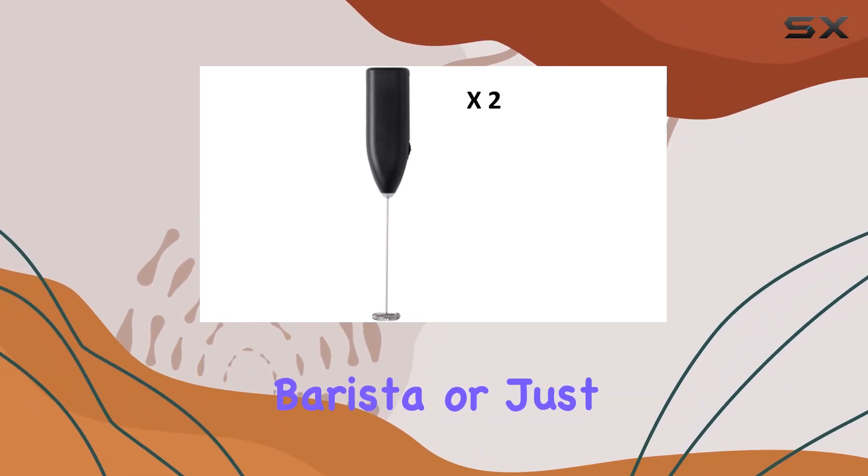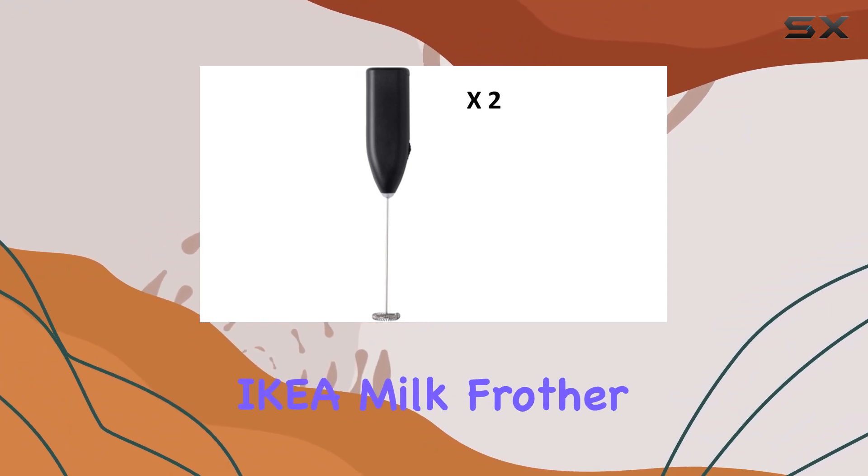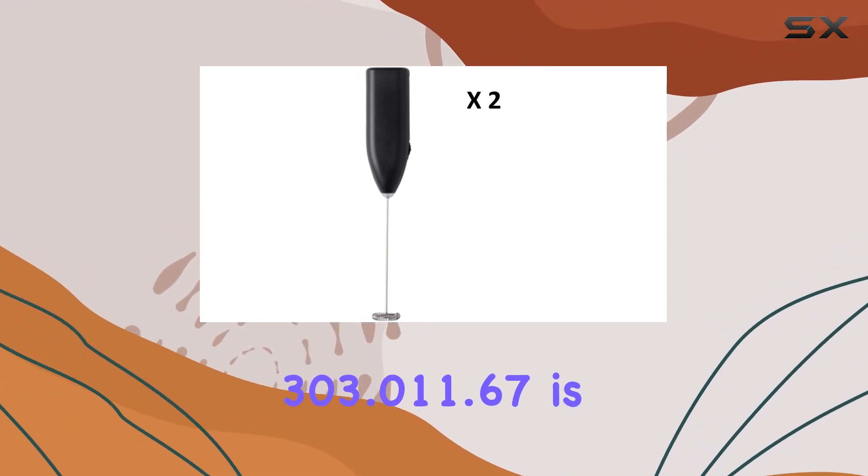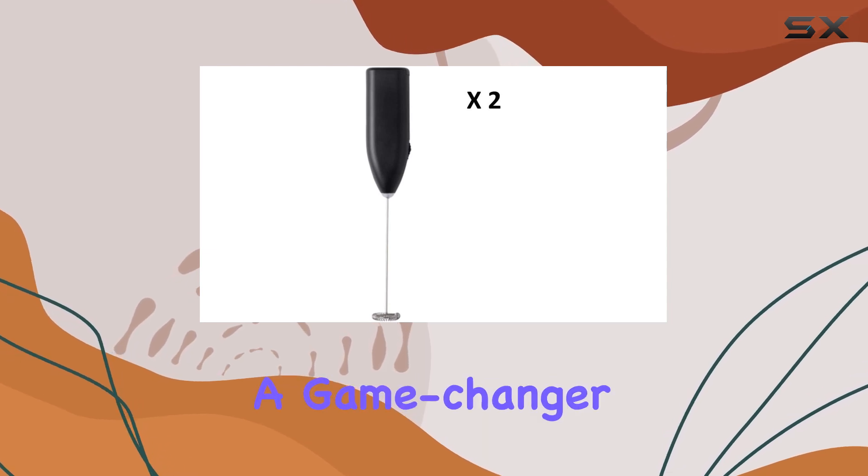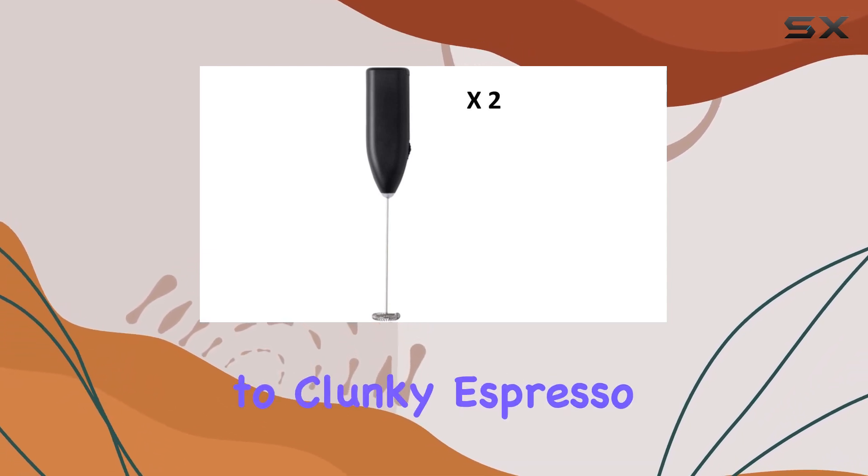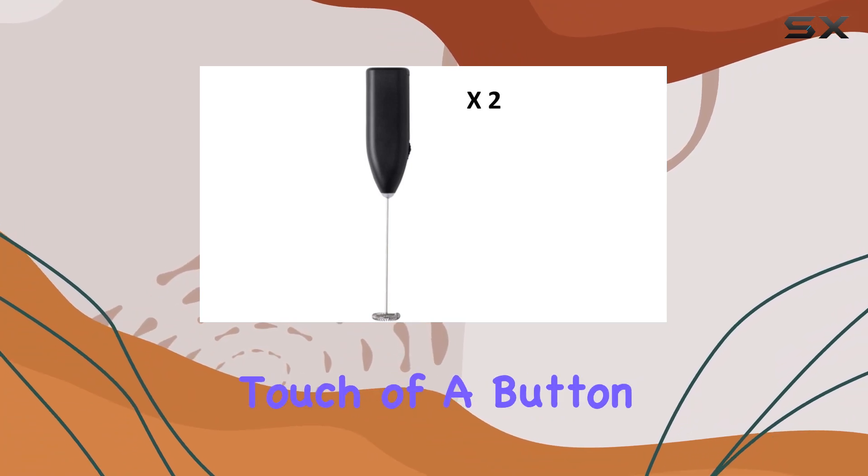Whether you're a seasoned barista or just looking to elevate your morning routine, the IKEA Milk Frother 303.011.67 is a game changer. Say goodbye to clunky espresso machines and hello to silky smooth froth at the touch of a button.